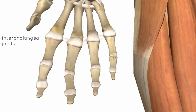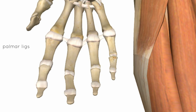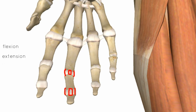Finally, we have the interphalangeal joints — a proximal interphalangeal joint and a distal interphalangeal joint. These are easy to learn because they have the same setup as the metacarpophalangeal joints: palmar ligaments and medial and lateral collateral ligaments on either side. There is less movement at these joints — just flexion and extension — so they are simple hinge joints. That covers the joints of the wrist and the hand.